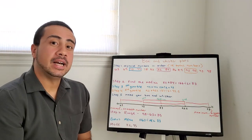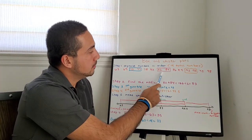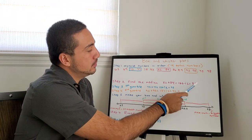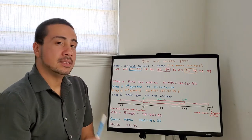Step 2, find the median. Median, numbers in the middle. 82 plus 84, 166 divided by 2 equals 83.